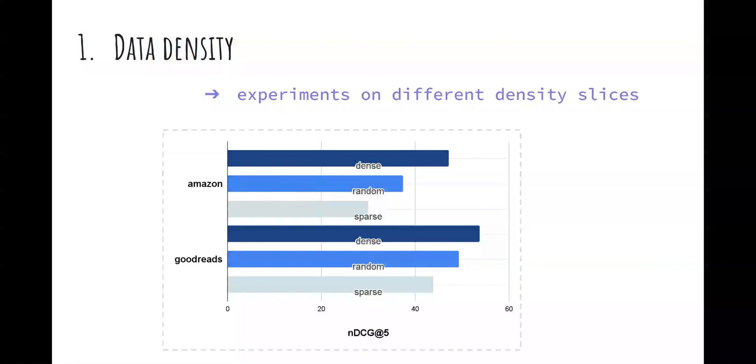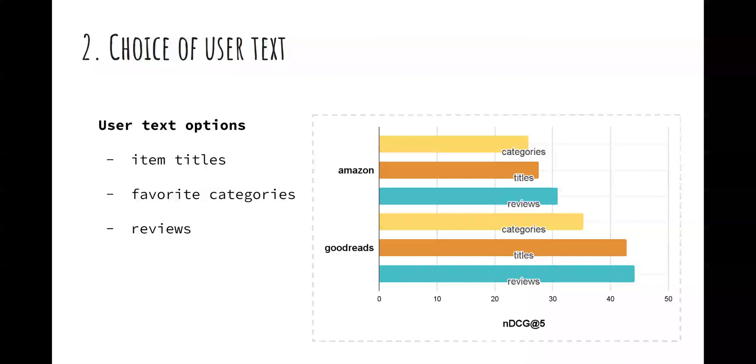Very often studies don't explore the full spectrum of available user text, focusing only on the titles of users' previous items or the users' favorite categories. We run our model on different selections of input user text and show that text-abundant user reviews provide the best recommendation signal.